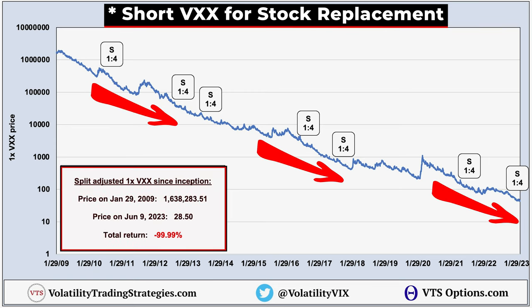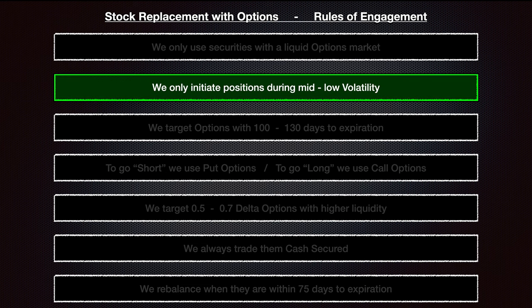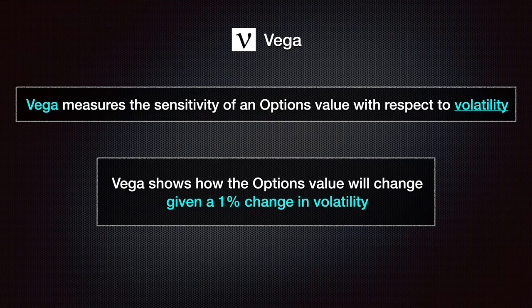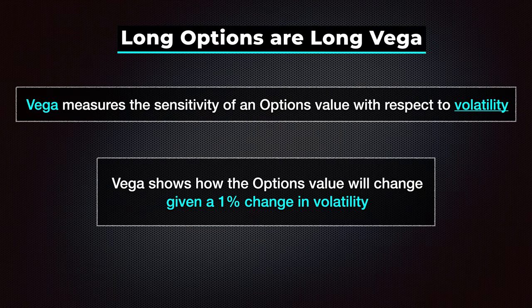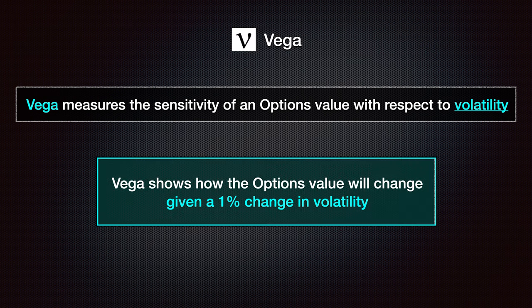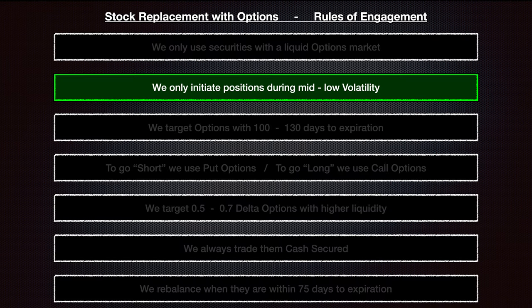VXX is one of the biggest volatility ETPs and it does have a very large and liquid options market. Number two: we only initiate positions during mid to low volatility. This is because when you're buying options, even though this is a price direction trade and we are just trying to simulate the VXX, we have to keep in mind that long options are what's called long Vega. The higher the volatility, the more expensive those contracts will be. Vega is a measure of how much an option value will change given changes in the volatility of the underlying security. So to reduce the Vega exposure, we do want to initiate trades when the market is relatively calm.